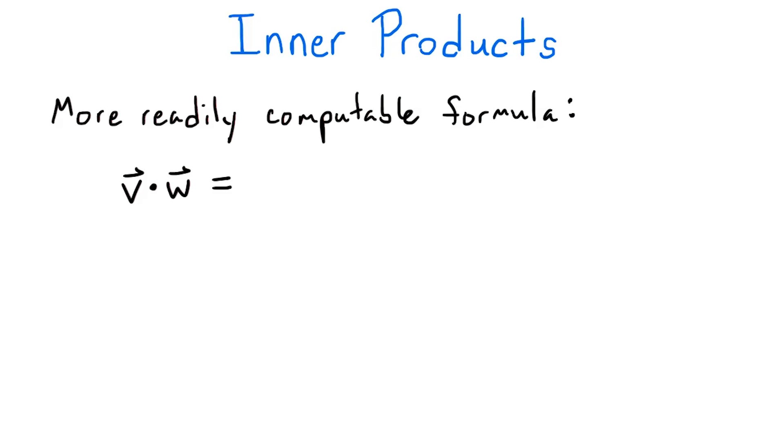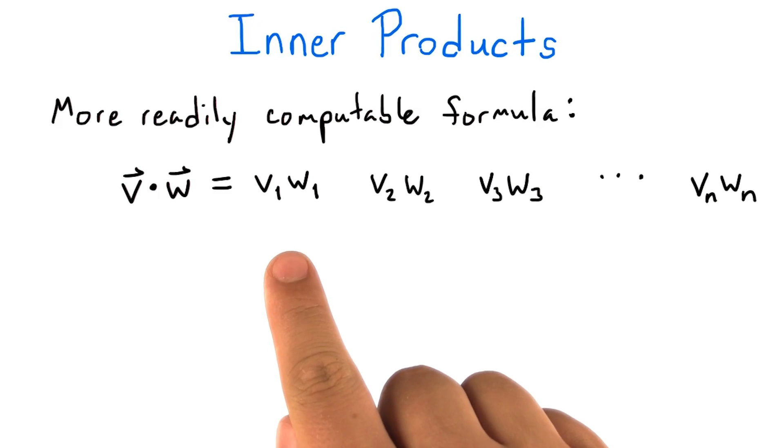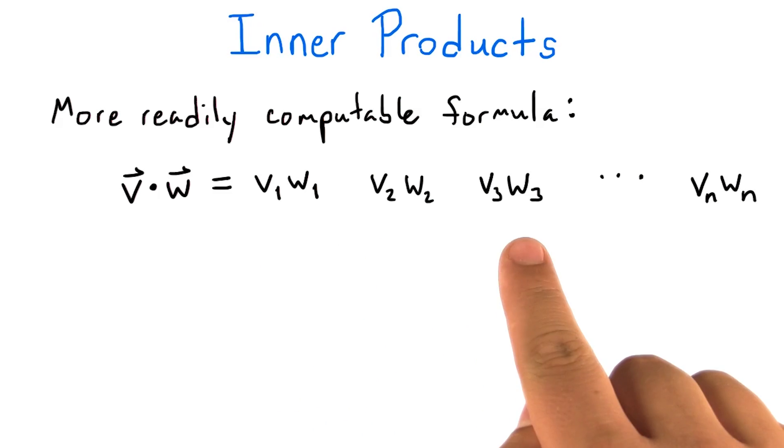It turns out that there is a nicer way to compute the inner product, and it is similar to our first candidate notion for multiplying vectors. To compute v dot w, we can multiply the corresponding components of v and w, and then we can add those products together.